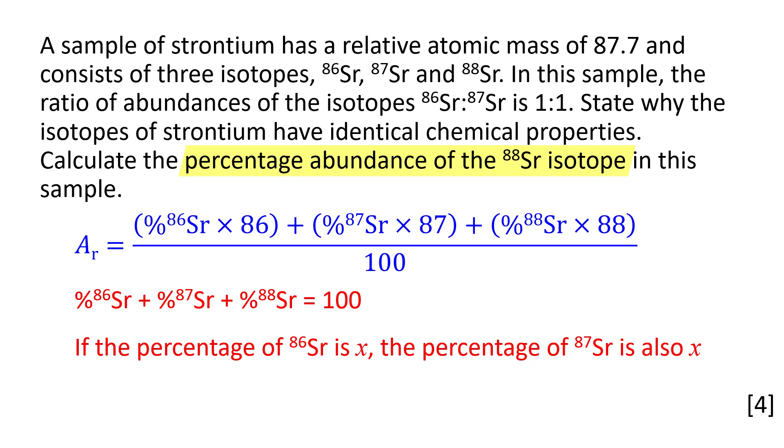To solve this equation, we need to use logic and algebra. The sum of the percentage abundances must be 100. The strontium-86 and 87 isotopes are present in a 1 to 1 ratio.